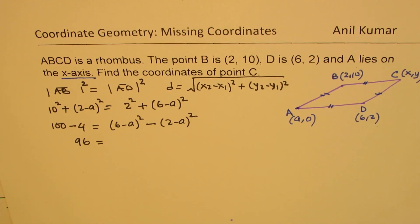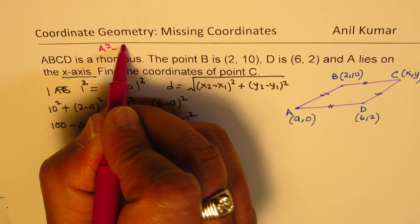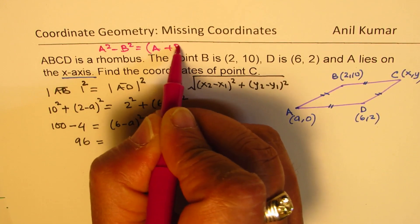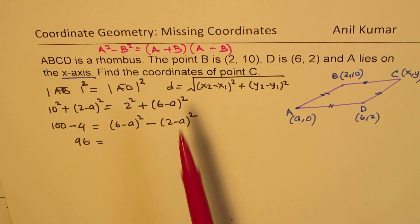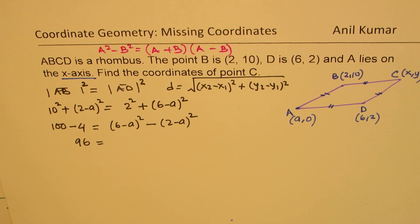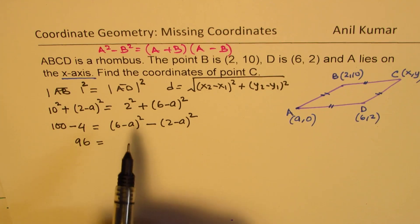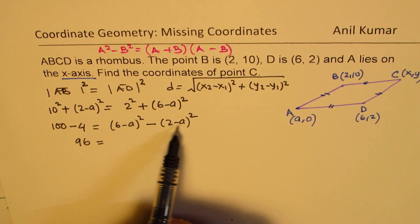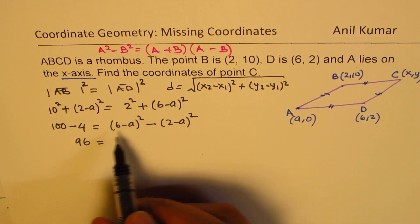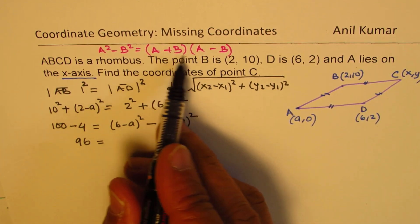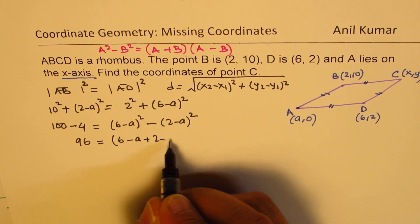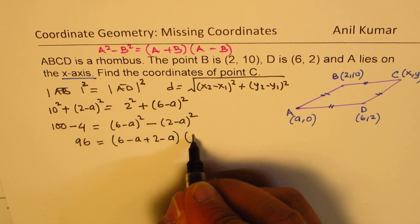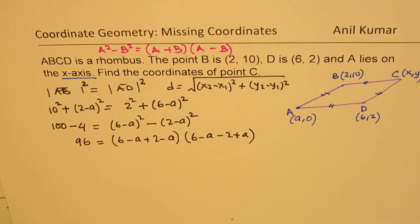Now here's a very important formula which you should remember. If we have A²-B², we could factor this as (A+B)(A-B). So instead of expanding and simplifying, I'll actually factor and then find. It'll be simpler for us. So what we get here is (6-A)² minus (2-A)², or we could expand it, but factoring is better. So A+B means (6-A)+(2-A) times A-B means (6-A)-(2+A).